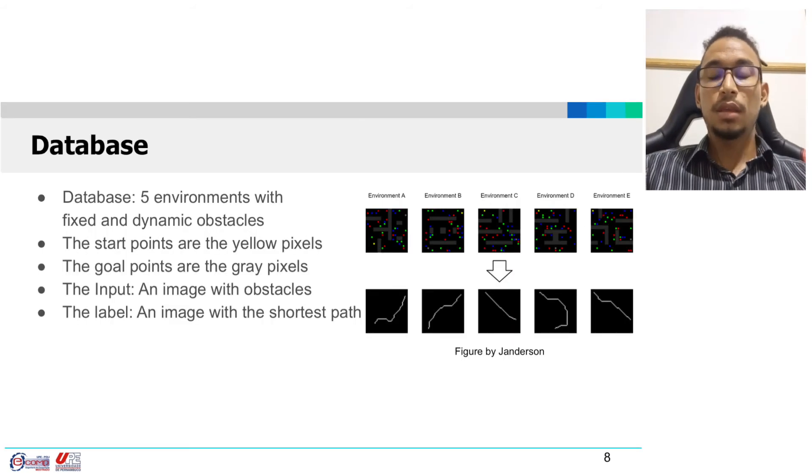The database used has five environments with fixed and dynamic obstacles. The start points are the yellow pixels and the goal points are the gray pixels. The input of the CNN encoder is an image of the environment and the label is an image with the shortest path.